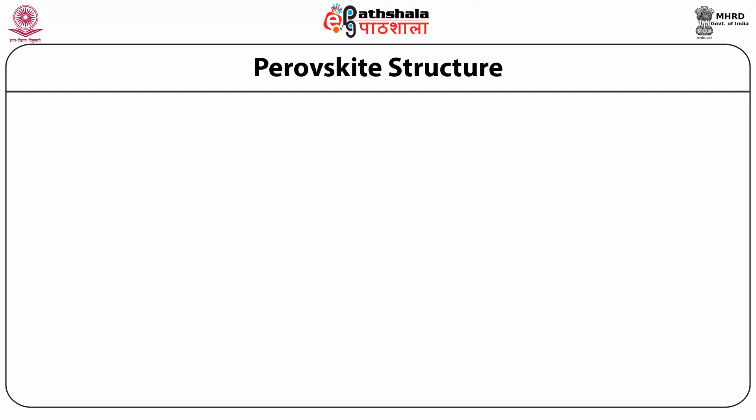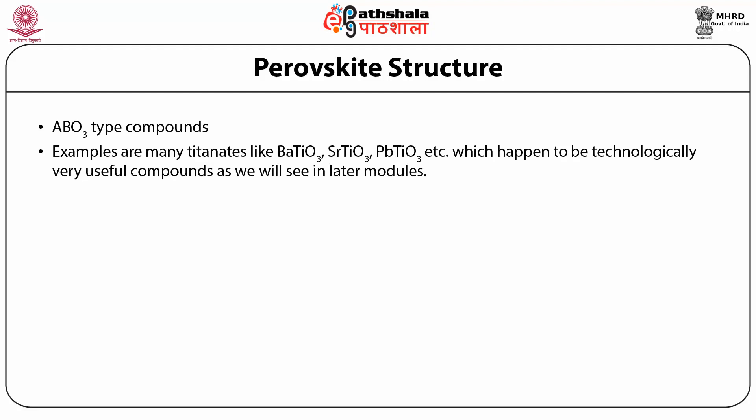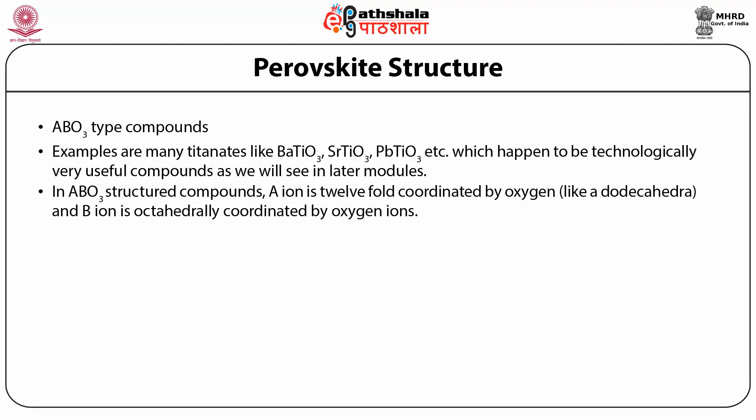Let us discuss about perovskite structures. Perovskite structures have a formula of ABO3 — they are ABO3 type compounds. Examples of perovskite structures are barium titanate, strontium titanate, lead titanate, etc. Such perovskite structures are mainly titanates, which are technologically very useful compounds as we will see in later modules. In ABO3 structured compounds, the A ion is 12-fold coordinated by oxygen octahedra and the B ion is octahedrally coordinated by oxygen ions.